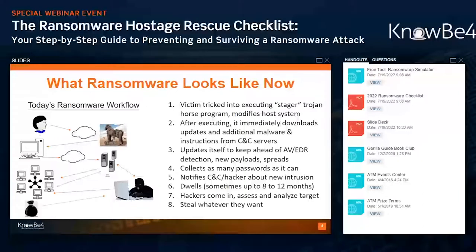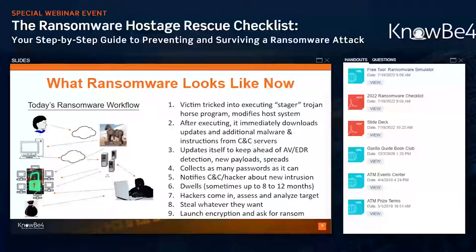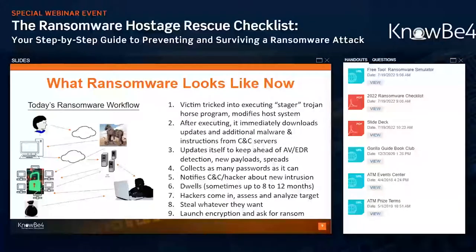The hackers come in, assess and analyze the target, steal whatever they want, and then if it's ransomware, they launch the encryption process. This is the way most ransomware works today — somewhere between 86 to 90% of ransomware works in this very sophisticated hybrid malware, human adversary method. Only 10% of ransomware just encrypts your data. So if you get something that just encrypts your data and doesn't steal credentials, consider yourself lucky — you got one of the simple ones.